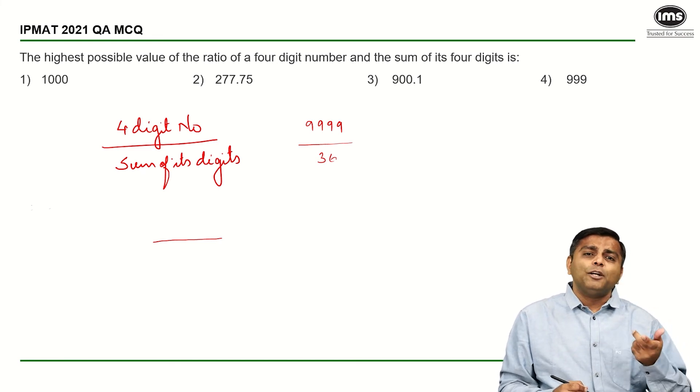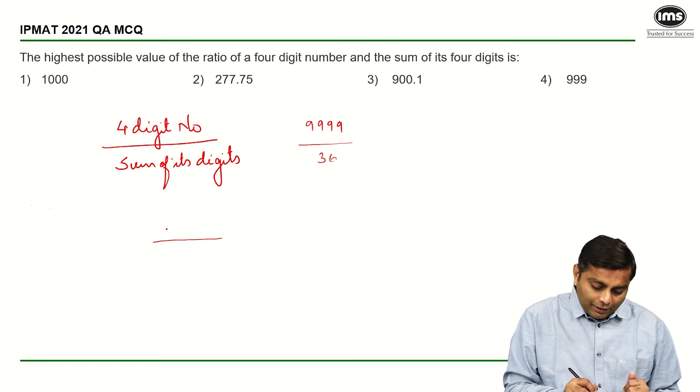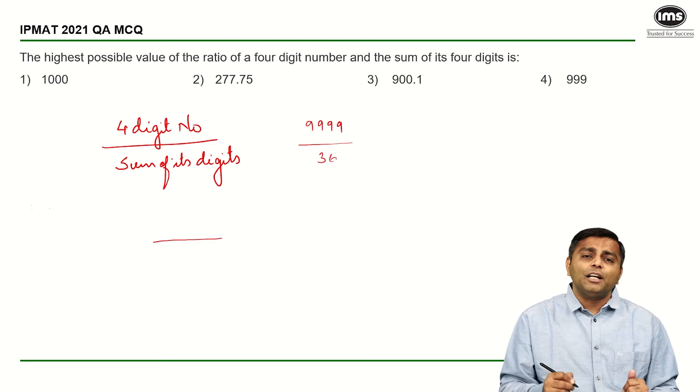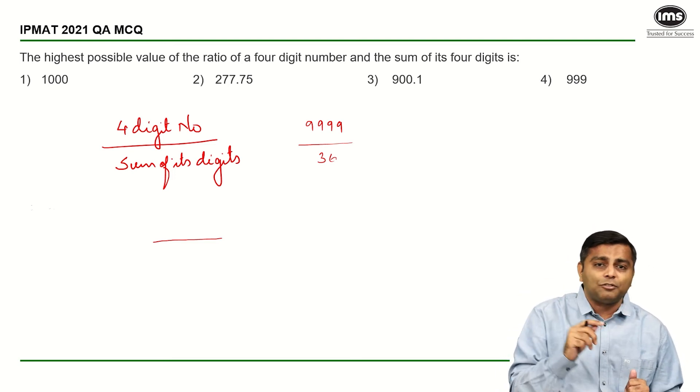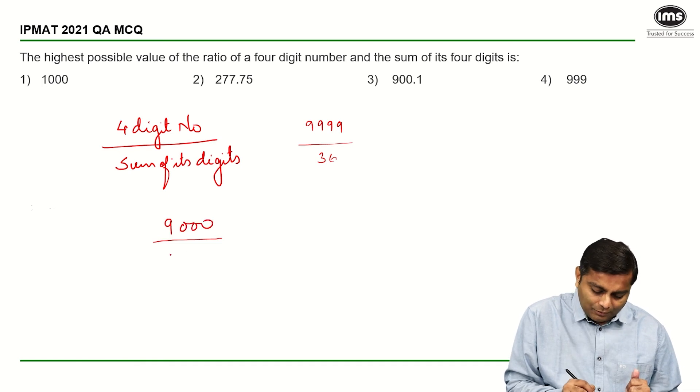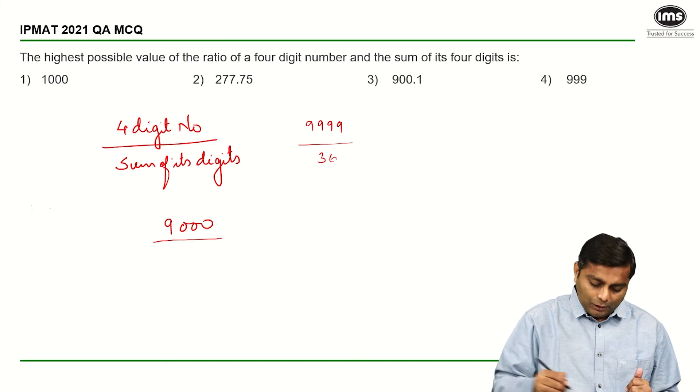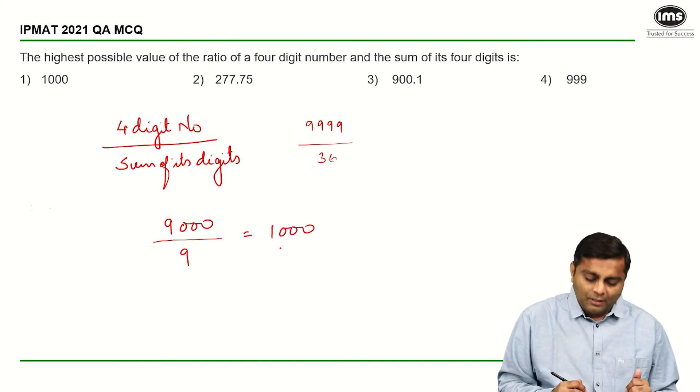Let's say if you try to maximize the numerator keeping three zeros in the denominator. So if I keep three zeros, then the maximum possible value of that digit which is left is 9. So if I take my number as 9000, it is going to be 9 plus 0 plus 0 plus 0, which is 9, which is again giving me 1000.